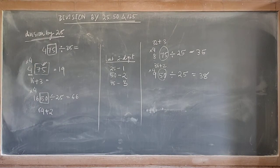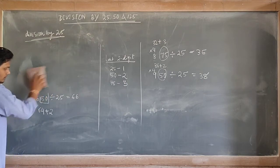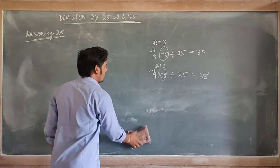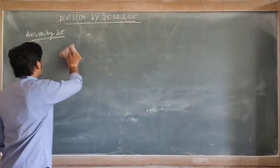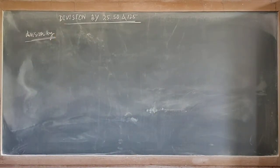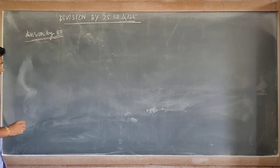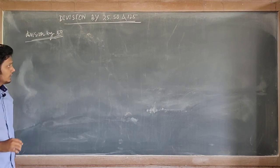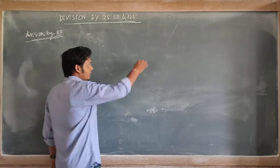Now we will discuss division by 50. We will take numbers which are totally divisible by 50. This is easier compared to division by 25.